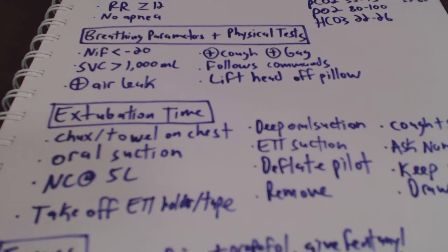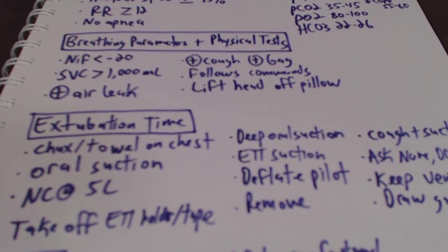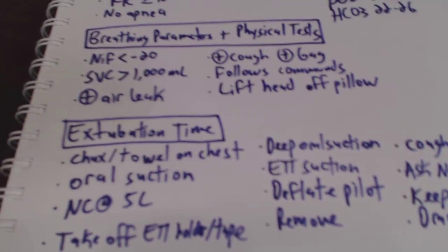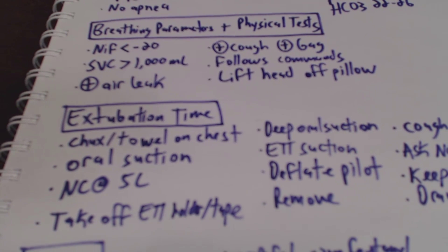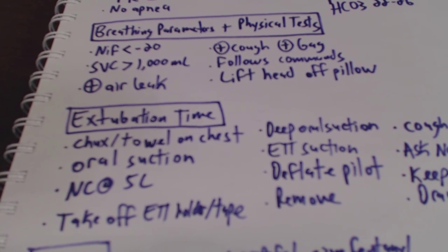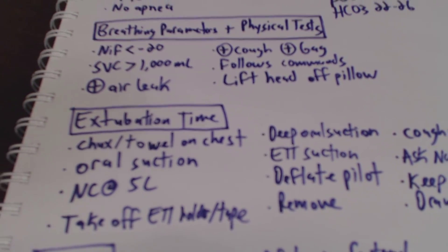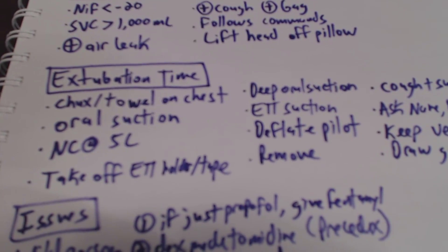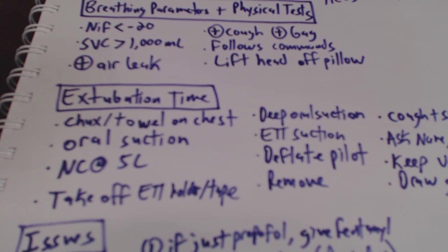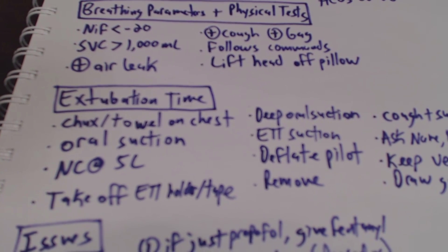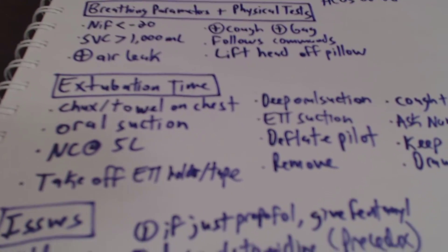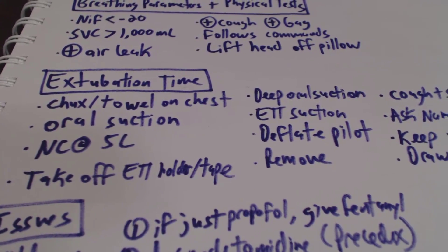Now it comes to extubation time. For extubation time, there's lots of things that you need to do to prep to make sure that we have a successful one. One of the things that I like to do is I always like to make sure that there's a chucks or a towel on the chest, so we can make sure that the gown is clean. We'll have oral suction nearby, which we should already have. I'll have a bubbler with a nasal cannula at 5 liters. At that point, I'll also take off the endotracheal tube holder or the tape.